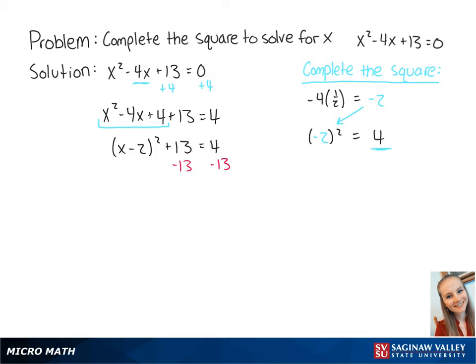We subtract 13 from both sides of the equation to get x minus 2 squared equals negative 9.